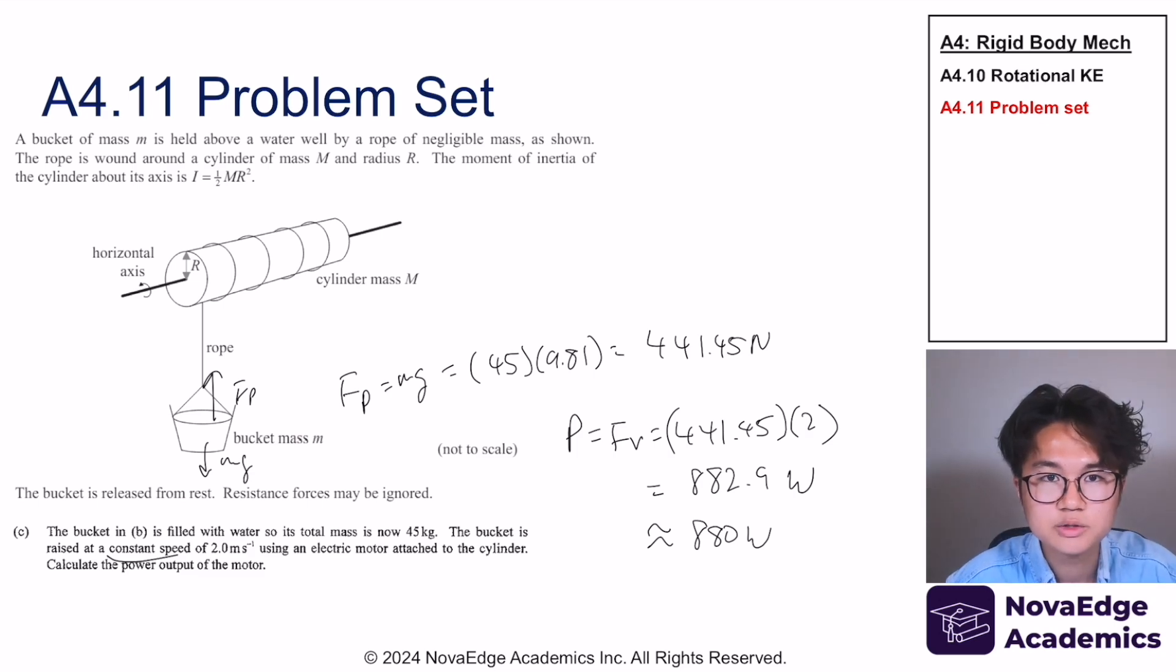And that's it. I hope you were able to do this problem. Being able to do past paper problems is very essential to getting a 6 or 7, especially 7 in IB Physics and IB Math as well. So if you would like more practice problems like this, please visit our website at novaedgeacademics.com. We'll be doing more videos of walking you through these kind of problems, and hopefully you can follow us along. I'll see you in the next video on relativity.